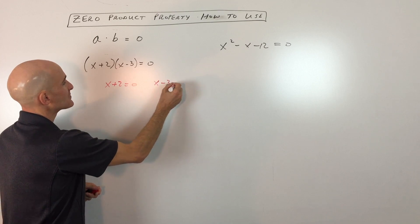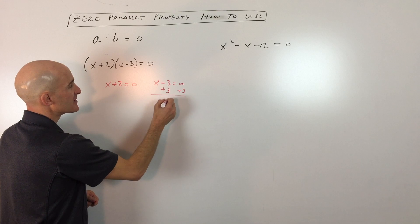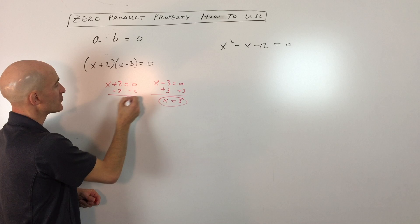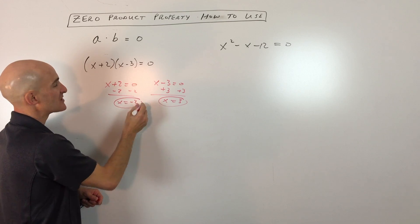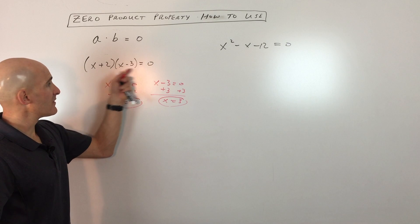So x plus two equals zero, or x minus three equals zero. If we add three to both sides, we're solving these little mini equations here: x equals three. Or if we subtract two from both sides, we get x equals negative two. So these are the two solutions to this equation.